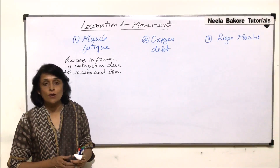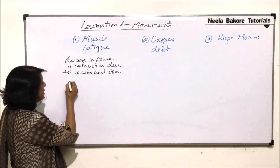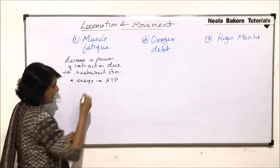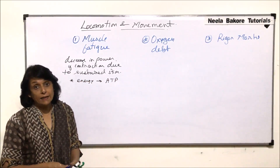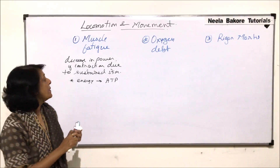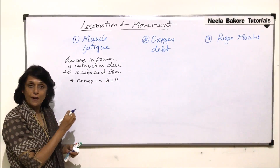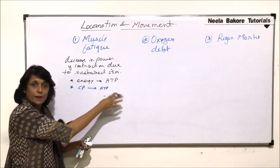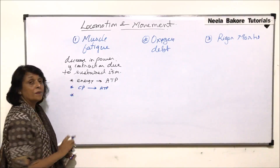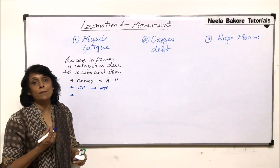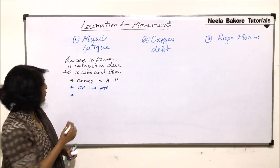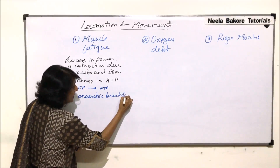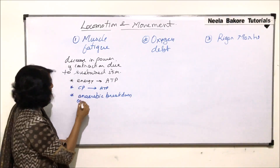What we know about muscle contraction is that initially the energy is supplied by ATP, because the muscle has a stock of ATP. If the muscle is contracted for a longer period of time, initially ATP will fulfill the energy requirement. After that, creatine phosphate will convert into ATP to help in muscle contraction.